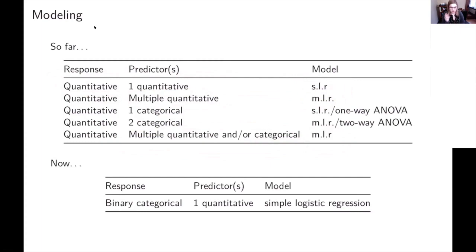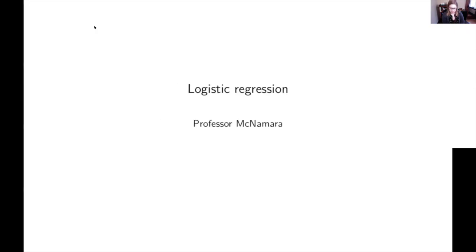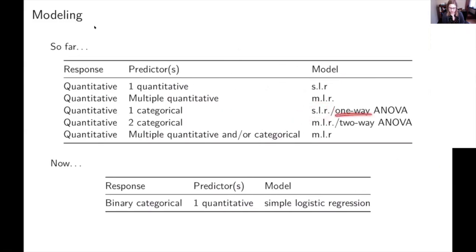And then we took a little break in unit B, a detour where we said, what if you had a quantitative response variable and one categorical predictor? You could do one-way ANOVA for that. You could also think about it as simple linear regression, but in a certain way it can be thought of as ANOVA.